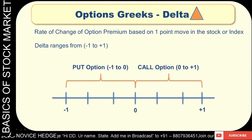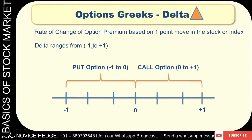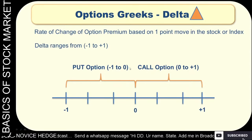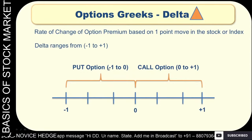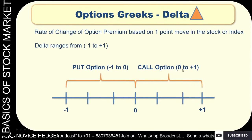The delta always ranges from minus 1 to plus 1. For put options, the delta value is negative, ranging from minus 1 to 0. For call options, it ranges from 0 to plus 1.